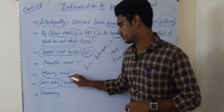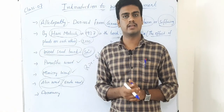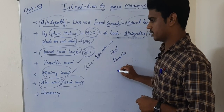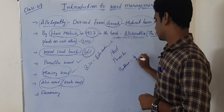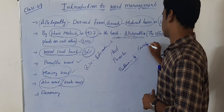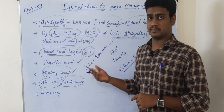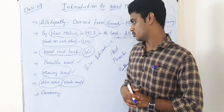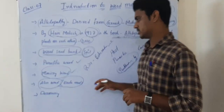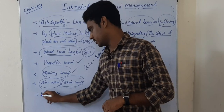An alien weed — also called an exotic weed — is a weed that has come from another country. For example, Parthenium hysterophorus, commonly known as carrot grass or congress grass, is a weed that has arrived from another country. This weed can also cause asthma in humans and is a very dangerous weed now found all over India.